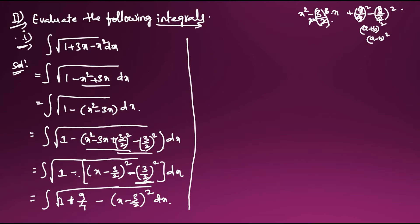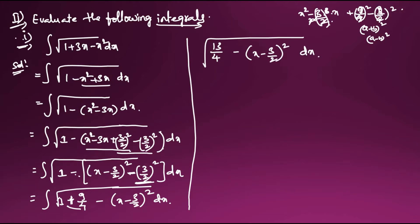Now 9/4 + 1 = 9/4 + 4/4 = 13/4. So the integral becomes √(13/4 - (x - 3/2)²) dx. We can write 13/4 as (√13/2)², giving integral √((√13/2)² - (x - 3/2)²) dx. Now we apply the standard formula.